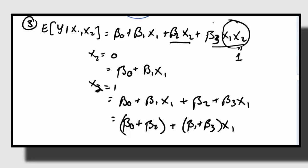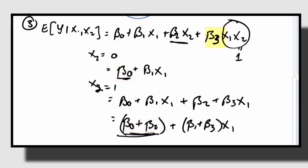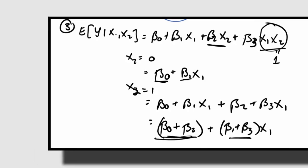If we omit the interaction term, we fit two lines with the same slope. If we include the interaction term, we get two lines with different slopes and different intercepts. The coefficient in front of the Catholic term by itself is the change in intercept going from Protestant to Catholic. The beta-3 term — the coefficient in front of the interaction — is the change in slope going from Protestant to Catholic, since the slope for X2 equal to one is beta-1 plus beta-3. Let's try it with some code — I think it'll be easier to see when we actually run it.